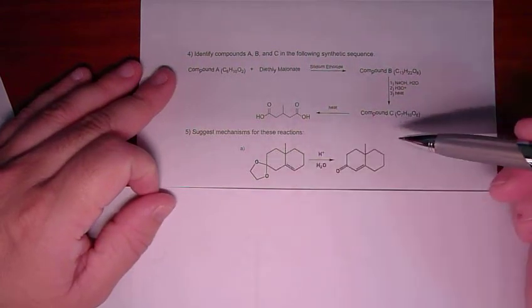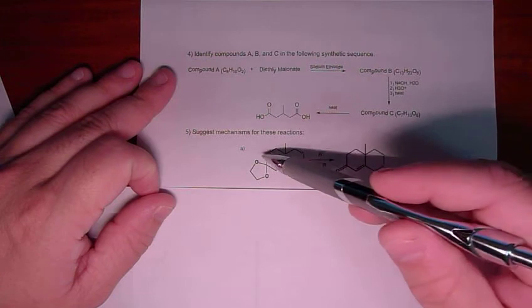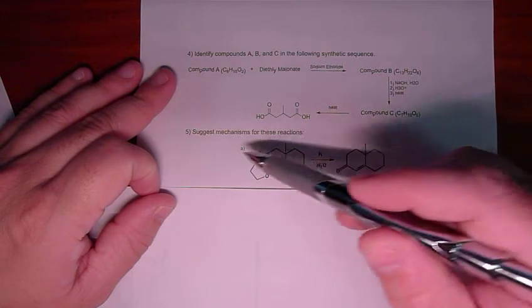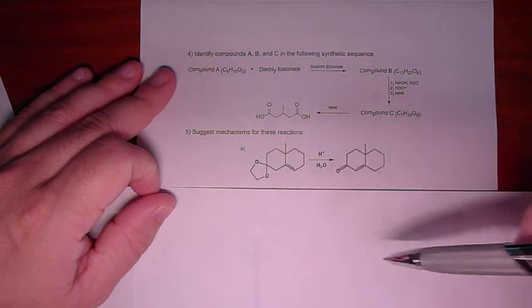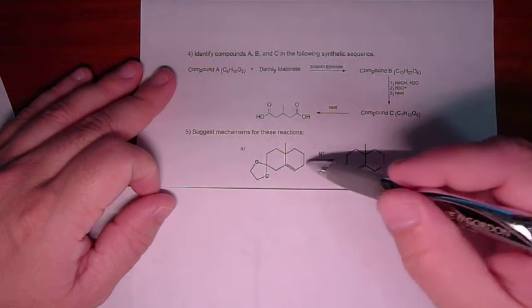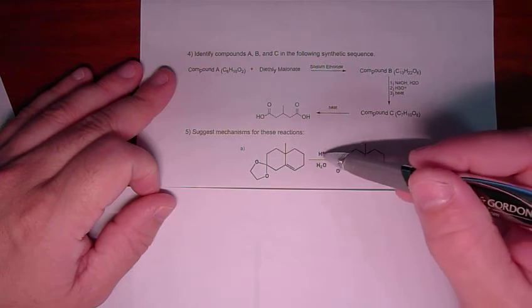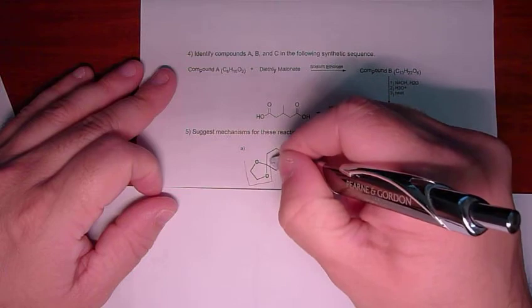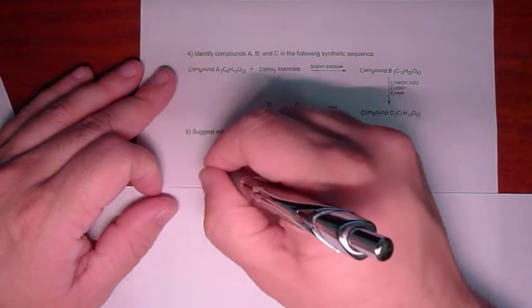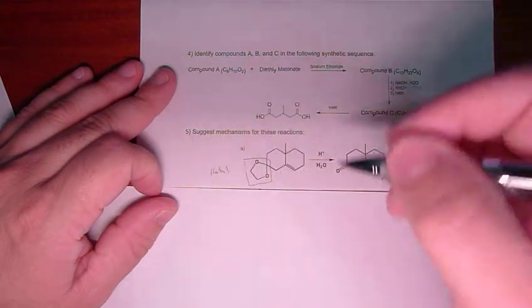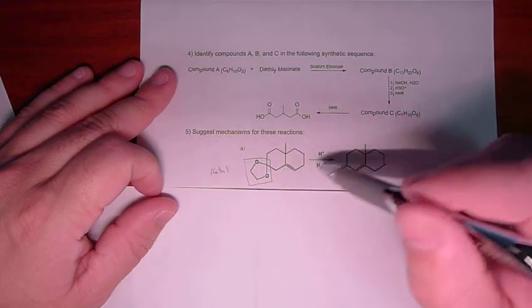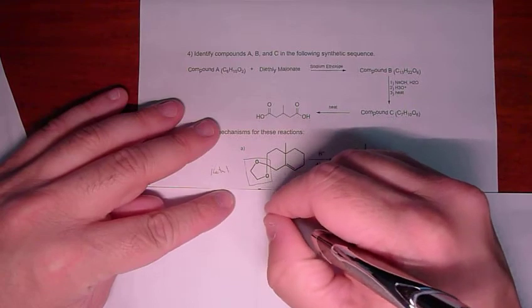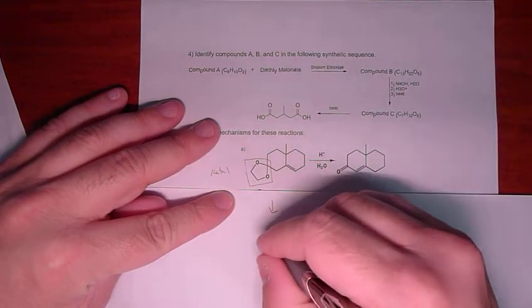Okay, so suggest mechanisms for these reactions. This one's pretty straightforward. What you should be looking for here is what is the chemistry that is going on. Hopefully if you see this, what you'll recognize is that this is a ketal and these are the conditions which are used to convert this ketal back to a ketone.